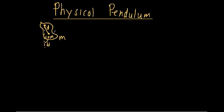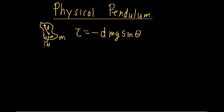Now, in order to figure out the torque, we first need to figure out what forces are acting upon this. And although it has a very unusual shape, we're just going to say that the force acts at the center of mass. The only force that we're concerned about is gravity. So we're just going to say that gravity acts at this point here. So our torque is going to be equal to minus D times Mg times sine theta, so we're working with the tangential component of the force.